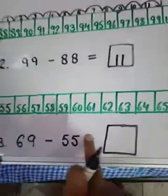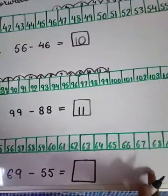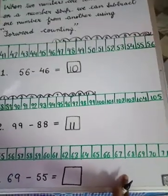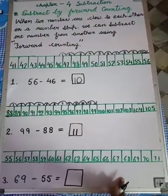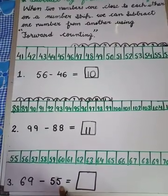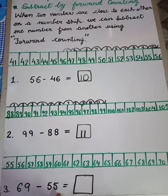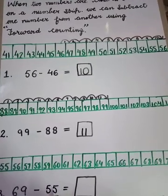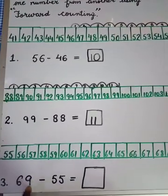Last sum is, there is another number strip from 55 to 71. Okay, let's begin. Now again, where will we start from? Smaller number. Where do we start from? We start from the smaller number.